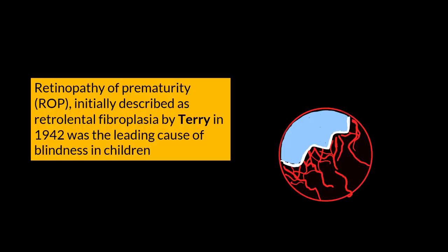Retinopathy of prematurity was initially described as retrolental fibroplasia, a term given by Terry in 1942, and at that time it was the leading cause of blindness in children. However, now it is famously called retinopathy of prematurity.